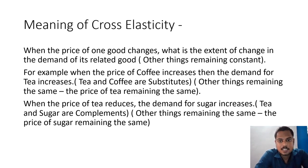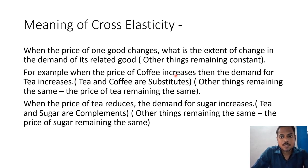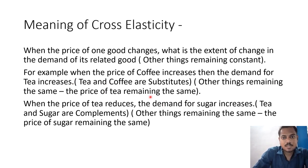This is possible because the two goods are related goods. When the price of one good changes, the demand for the related good also changes. For example, when the price of coffee increases, the demand for tea increases. Tea and coffee are both related goods. When the price of coffee is increasing, people will substitute coffee and buy more tea, so the demand for tea increases. We are going to measure the extent of this demand increase for tea. This is called cross price elasticity.